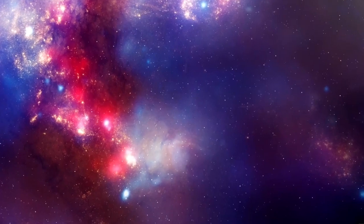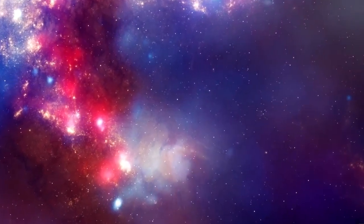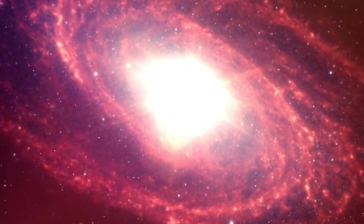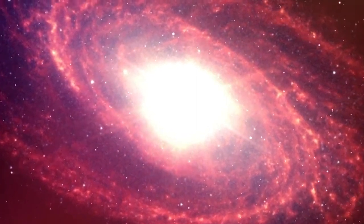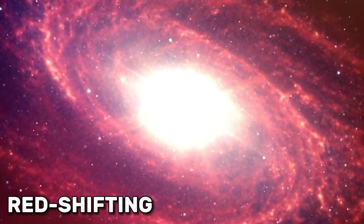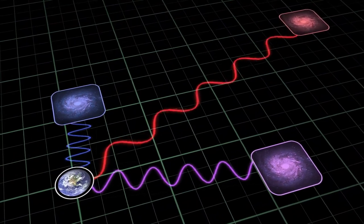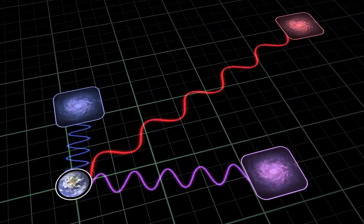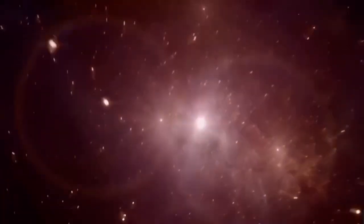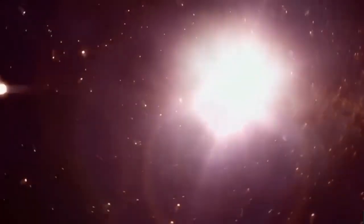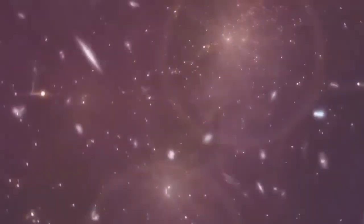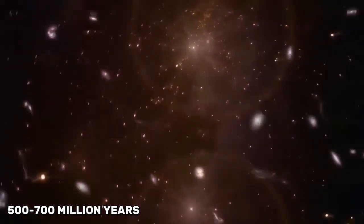In astronomy, the color red indicates the age of an object. As light from distant objects travels through the expanding universe, it undergoes a transformation known as red shifting. This means that the light waves get stretched out, causing them to shift toward the red end of the spectrum. Based on this, scientists estimate that these galaxies are approximately 13.5 billion years old, appearing around 500 to 700 million years after the Big Bang.